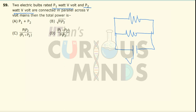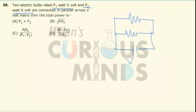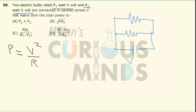The total power through the mains will be equal to I squared into R, or equivalently V squared divided by R, where R is the total resistance. So we need to find the individual resistances first.